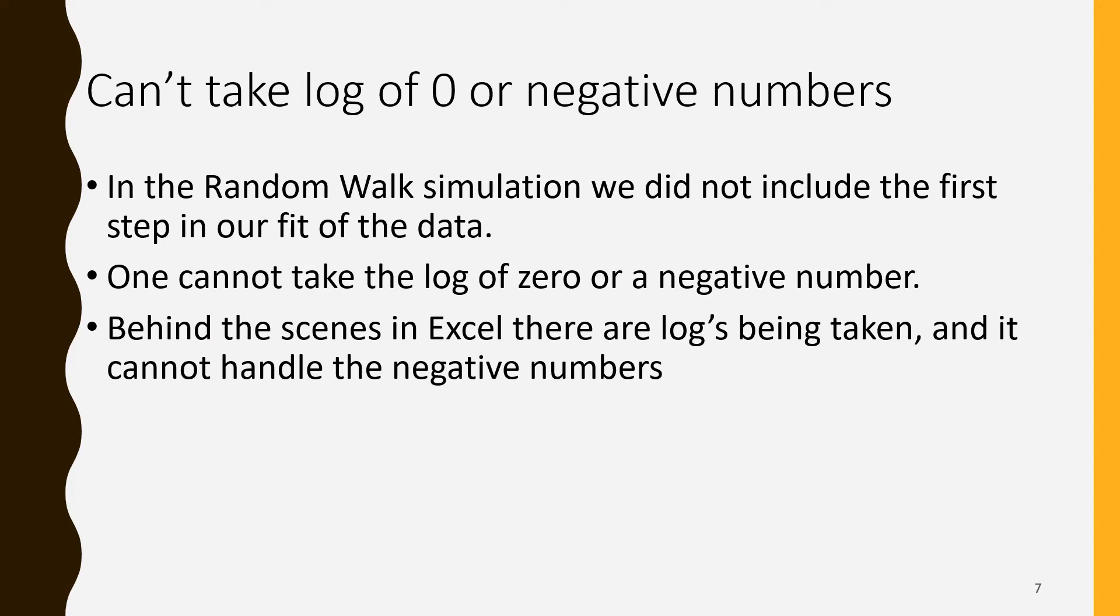Just a reminder, we simulated a random walk and the first x and y point of the random walk was zero zero. But when we fit our data in Excel we did not highlight that first data point. That was because we are fitting a random walk to a power law and a power law has hidden behind the scenes taking logarithms. Excel just hides the logarithms from you but we're doing it more explicitly in R. That was why in Excel we had to skip over that zero zero point because Excel was doing the same log that we're doing here in R. You can't take the log of zero.